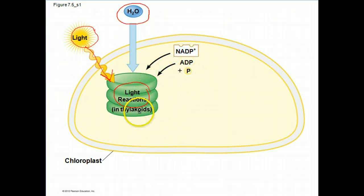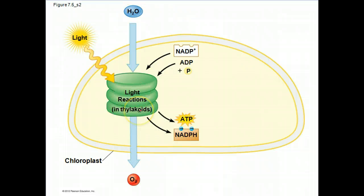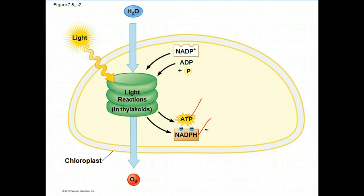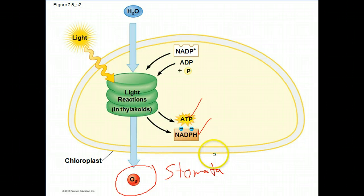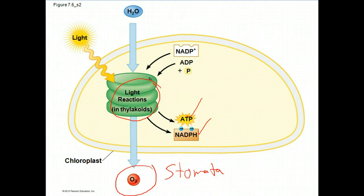Those things are basically recycling back into the light reactions process. The process in the light reactions is basically going to produce ATP, and it's going to add electrons to NADP+, making NADPH. Oxygen is produced as a byproduct — that's actually a toxic byproduct for the plant cells, so they release oxygen through the stomata, which are basically the pores in the plant leaf. That's a basic summary for the light reactions — the first half of photosynthesis.